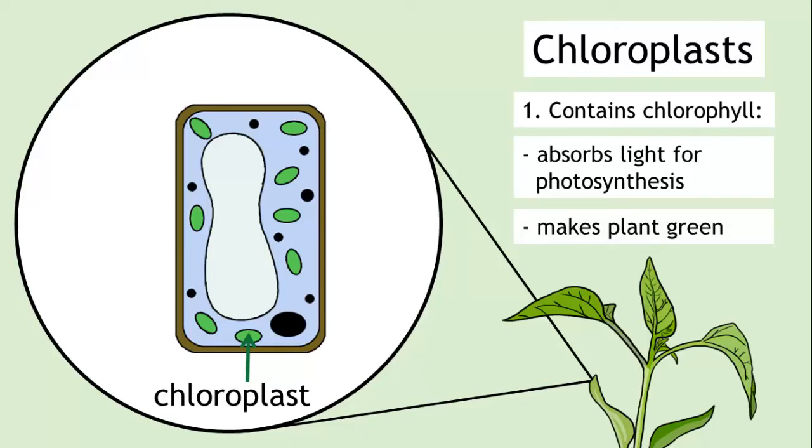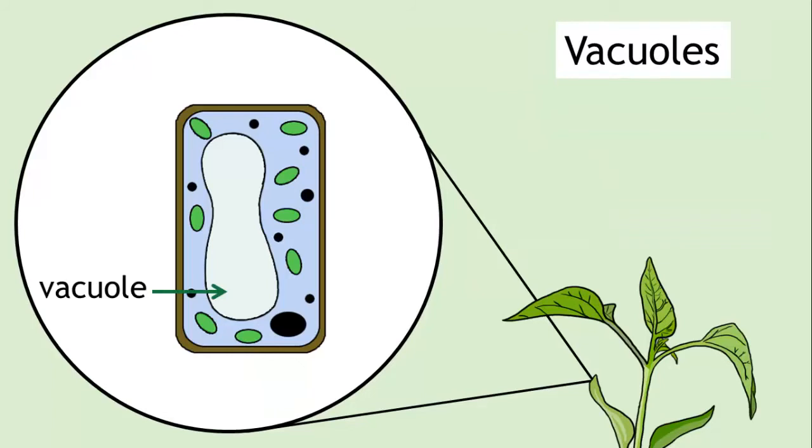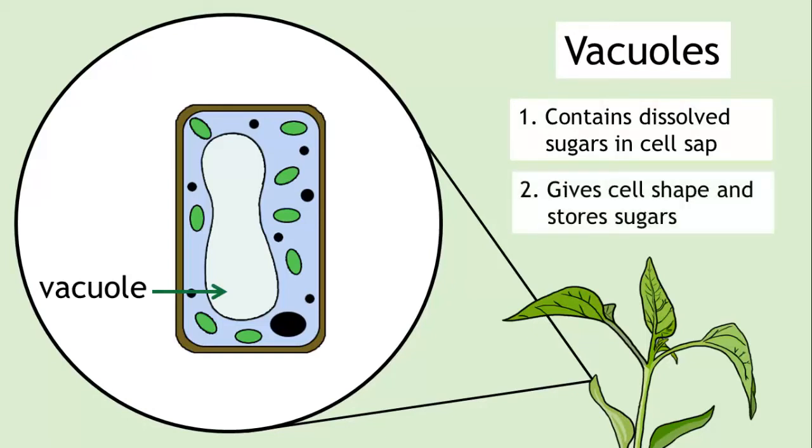Finally, plant cells also contain structures known as vacuoles. These are filled with a watery substance which contains dissolved sugars, called cell sap. The role of the vacuole is to provide support for the cell shape and to store sugars.